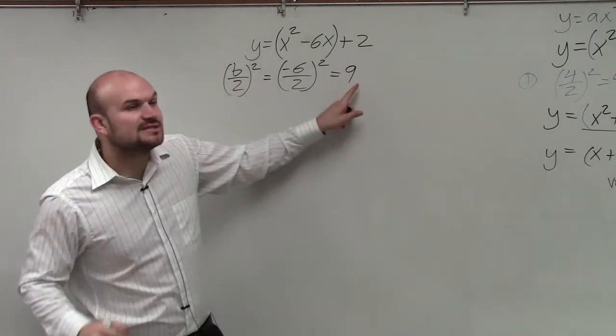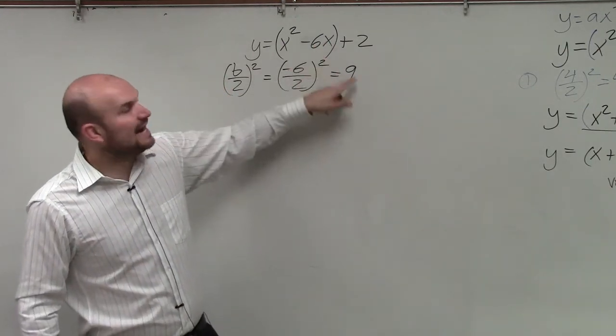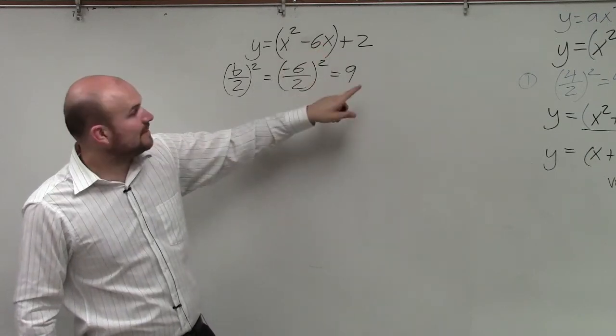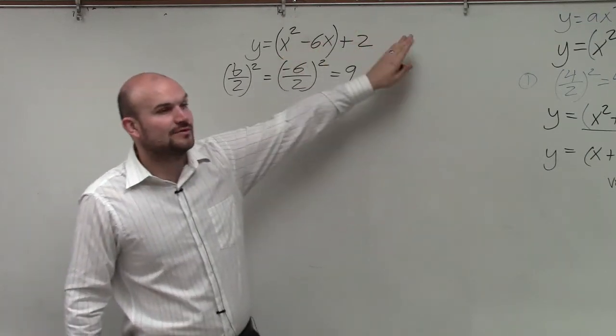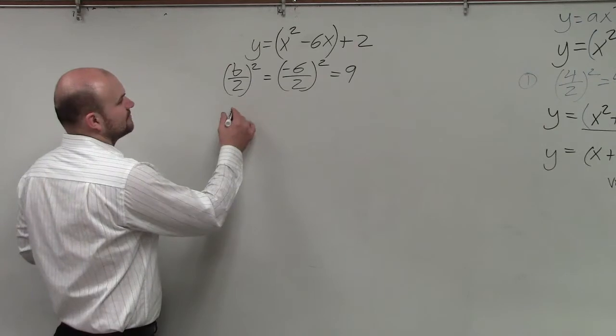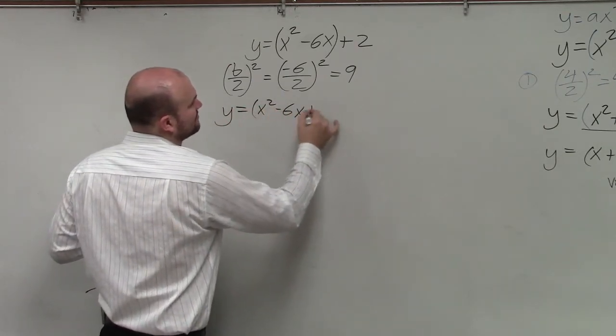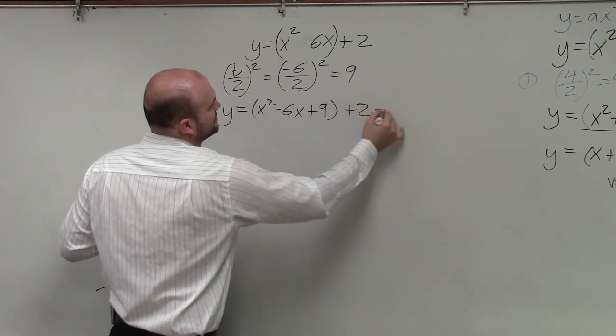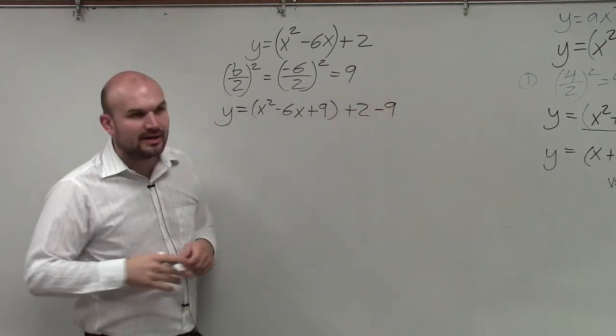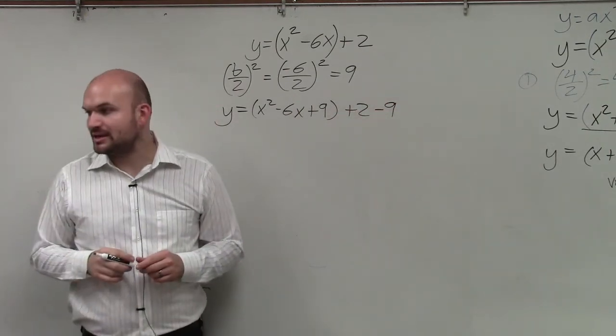So now, all we do is simply take the 9 and add it inside the parentheses. And if I'm going to add it inside the parentheses, then I have to subtract it outside. So I have y equals x squared minus 6x plus 9 plus 2 minus 9. Is everybody okay with how we get to here?